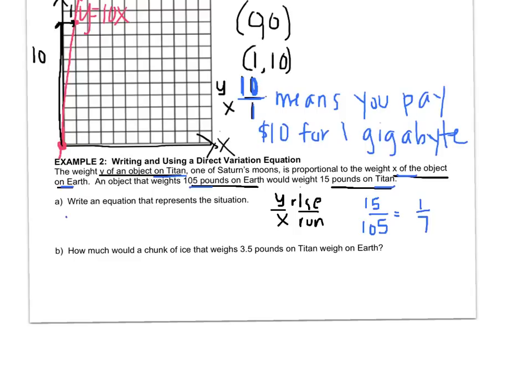So the equation is y equals, if that's the slope then that goes in front of the x, and there's my equation y equals one seventh x.